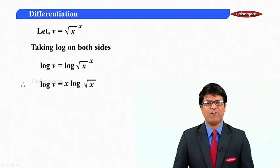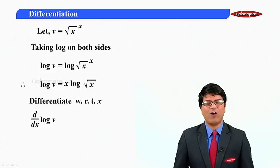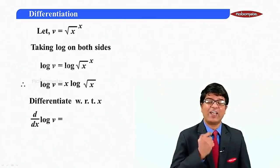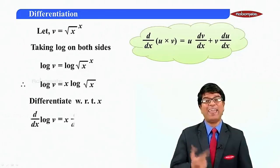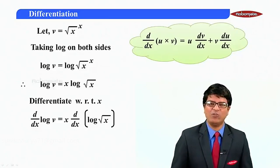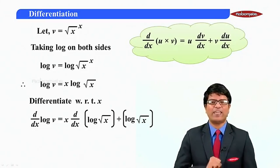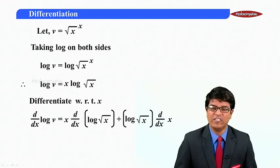Let us differentiate with respect to x. Using the product rule, d by dx of log v gives x times d by dx of log root x, plus log root x times d by dx of x.